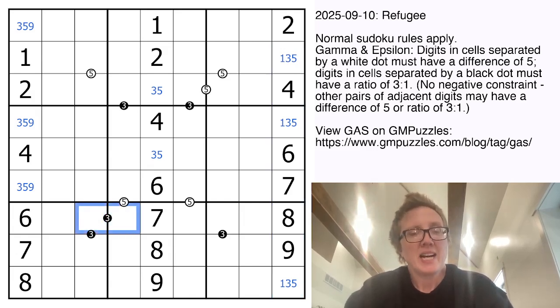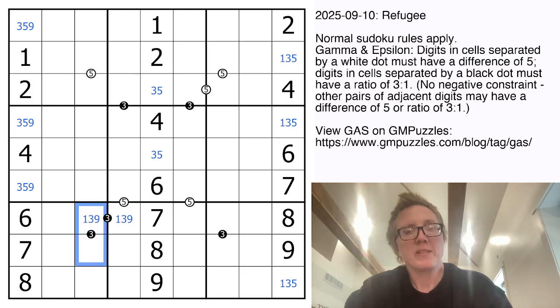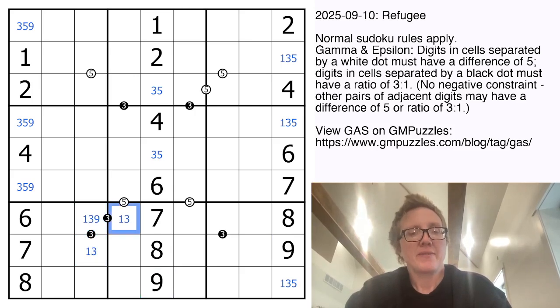So this pair can't have a 6 in it, so it can't be 2 and 6, so it's either 1 and 3 or 3 and 9, which means this pair is also either 1 and 3, or 3 and 9. We have two 9s here. This is definitely not a 9, and one of these two is going to be a 9.